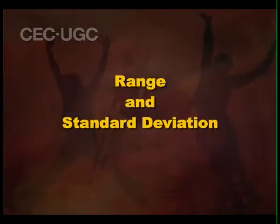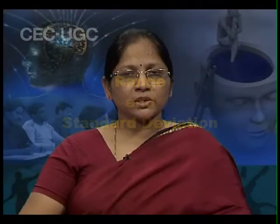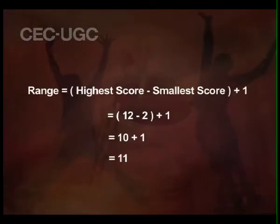We use different types of measures of variability, but today we will discuss two types: range and standard deviation. Range is a good measure of variability — it measures the span of a distribution. For example, if the highest score is 12 and the lowest score is 2, then the range will be 12 minus 2 plus 1, which is 11.